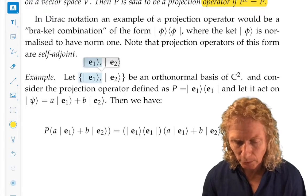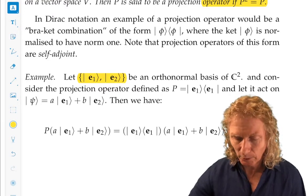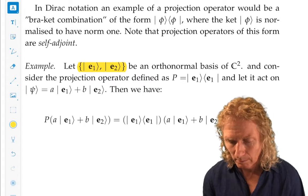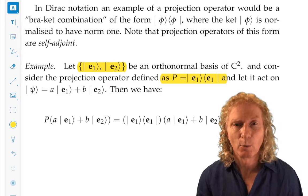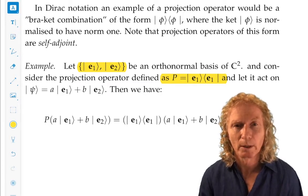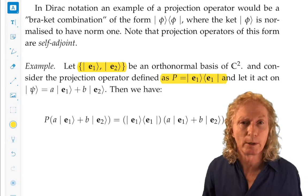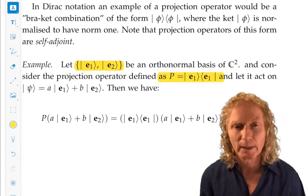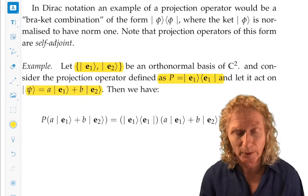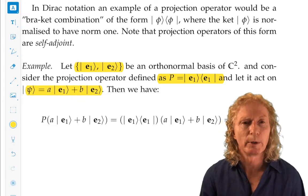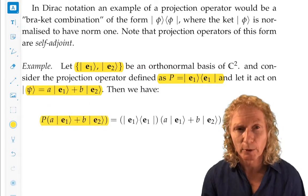So let E1, E2, ket E1, ket E2, be an orthonormal basis of C2. And let's consider the projection operator defined in this way: ket E1 bra E1, the same indices, ket E1 bra E1. Now, how do I know that's a projection operator? I'll get around to that. I need to show that P squared equals P. But let's look at its action on vectors. So let's take an arbitrary vector in C2. An arbitrary vector can be written as a linear combination of the basis vectors. And let's let P act on that arbitrary vector.